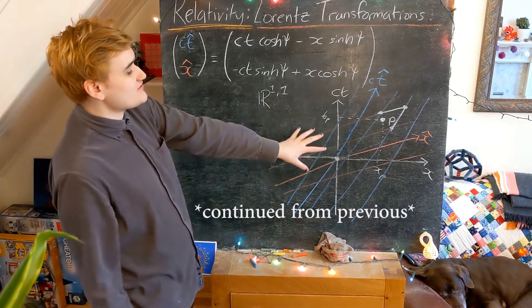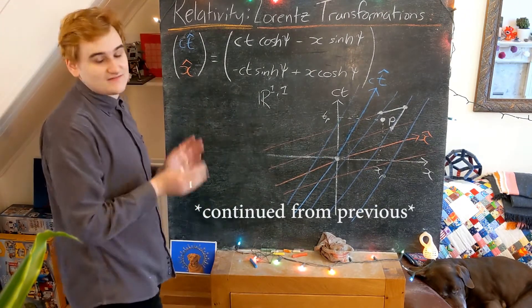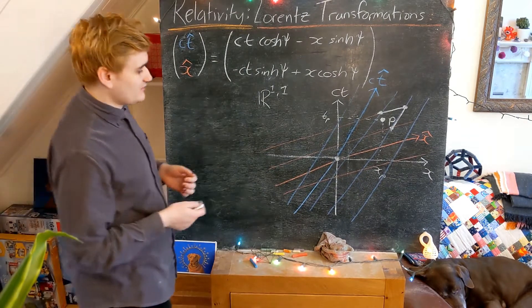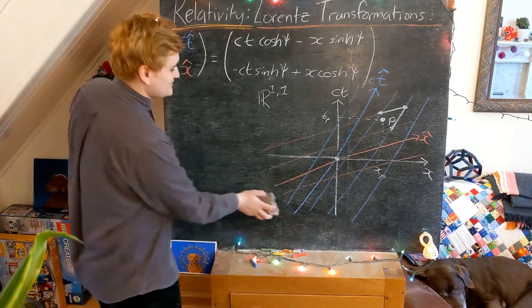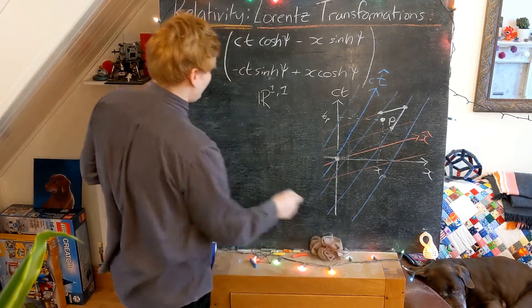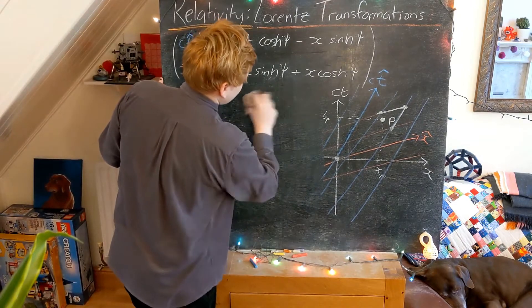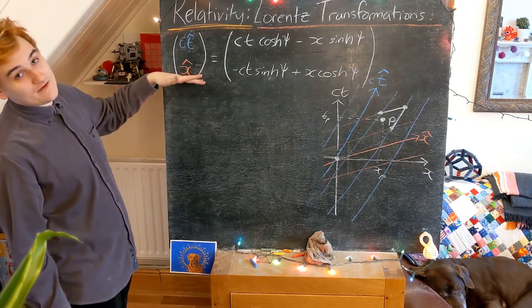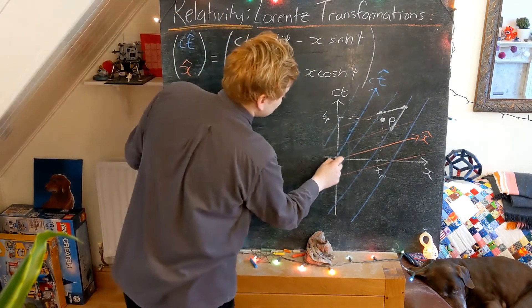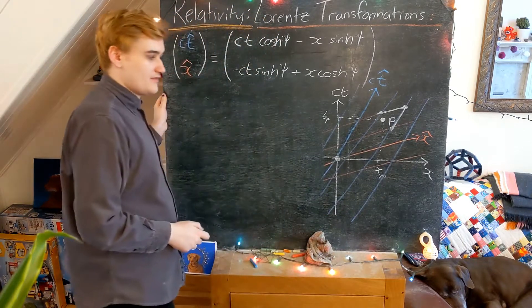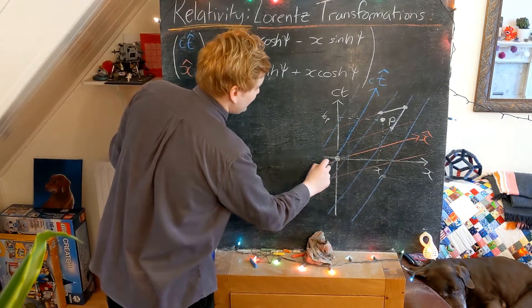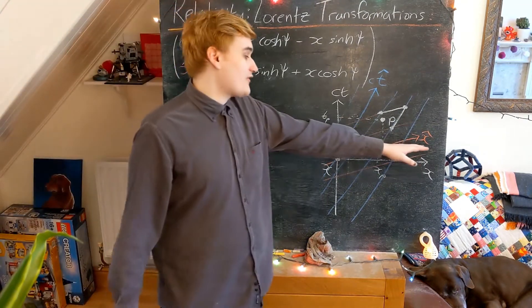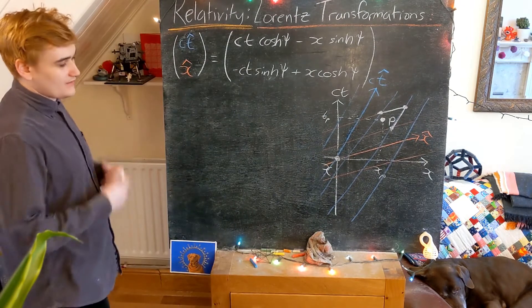Geometrically, what this boost is going to do is effectively just take our orthogonal axes and skew them together. Now let's try to come up with what this is physically corresponding to. This new boosted set of coordinates is another reference frame — we started in some stationary particle's reference frame X, and we're then boosting via a Lorentz transformation into some new frame, the X-hat frame.